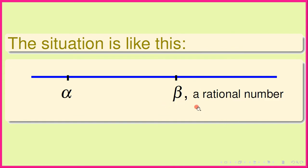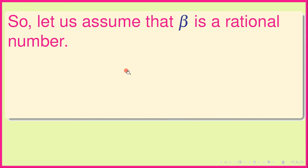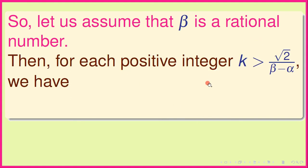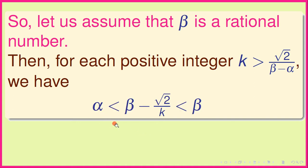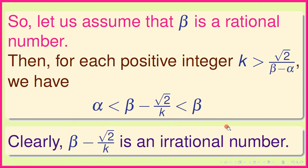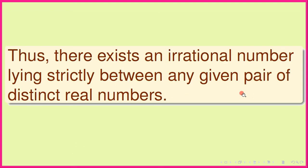So we assume that beta is a rational number. Then for each positive integer k strictly greater than √2 / (beta - alpha), we have alpha < beta - √2/k < beta. In other words, beta - √2/k lies strictly between alpha and beta. Clearly, beta - √2/k is an irrational number because beta is rational. Thus, there exists an irrational number lying strictly between any given pair of distinct real numbers.